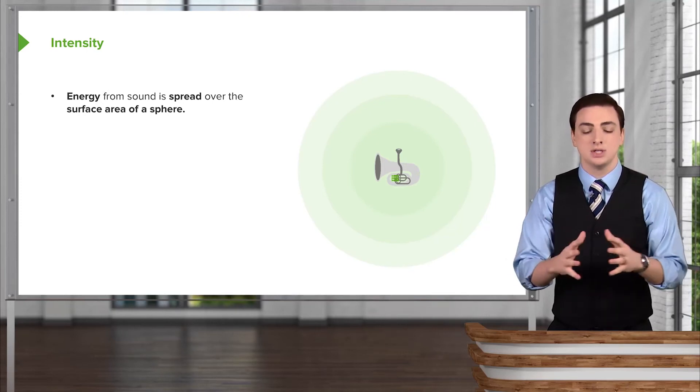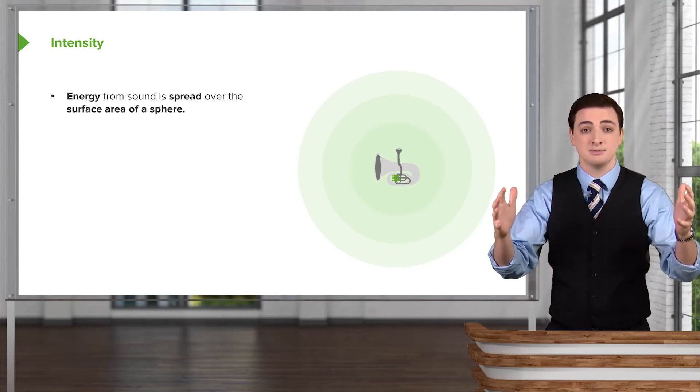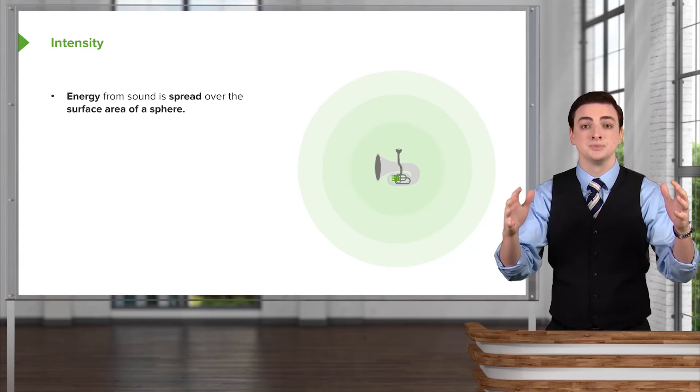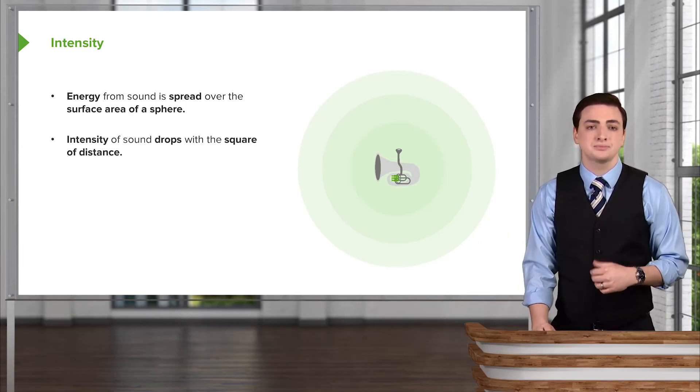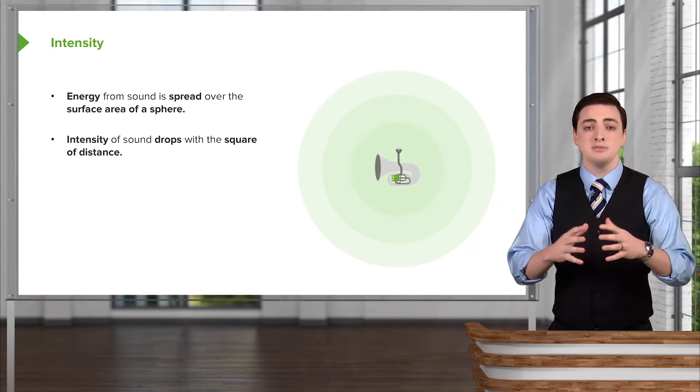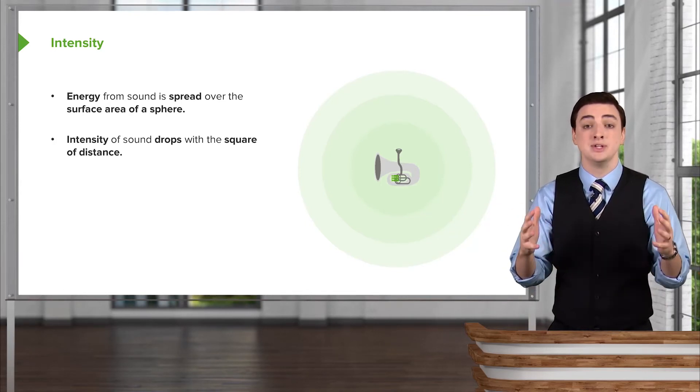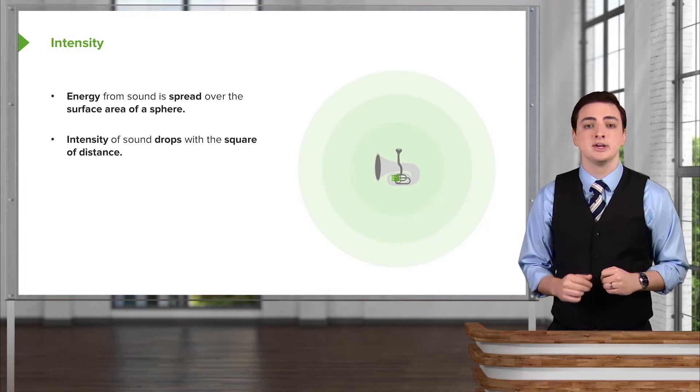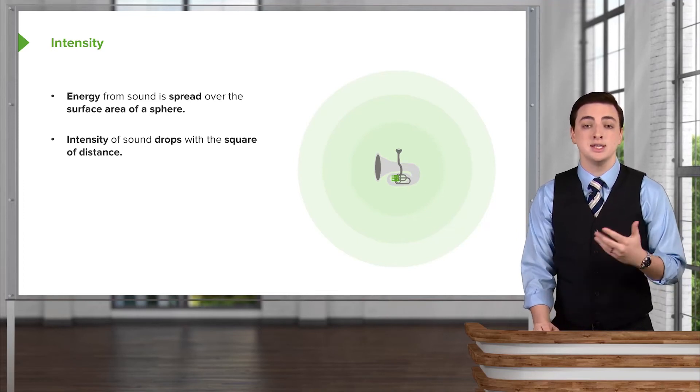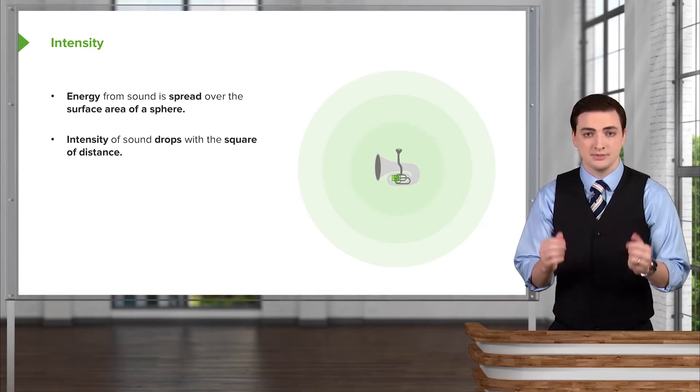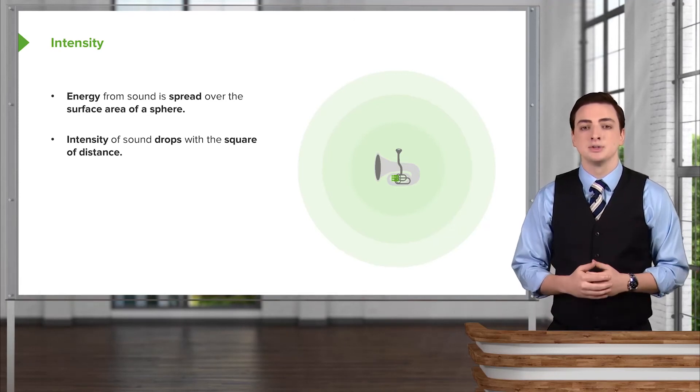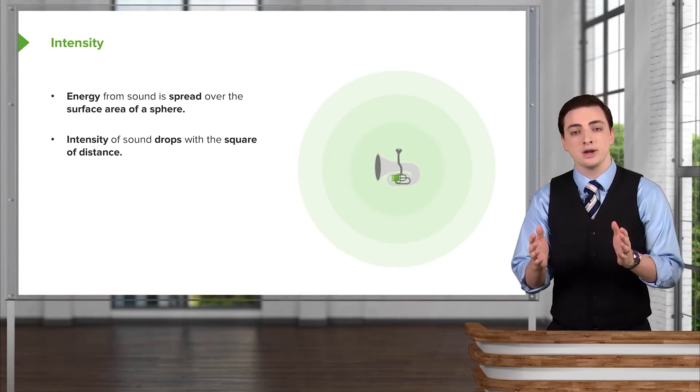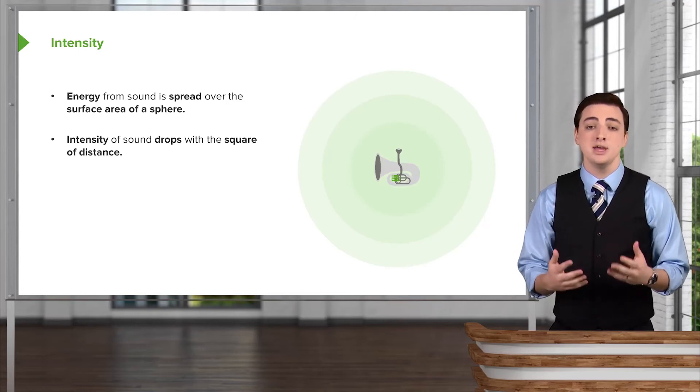When this happens, because the energy has to be spread out across the surface area of the sphere as it's traveling outwards, this energy is conserved. As the sound wave travels in all three dimensions, and we know the surface area of a sphere depends on the square of the radius, we can say that the intensity or the energy of the sound drops as the square of the distance that you are away from the sound.